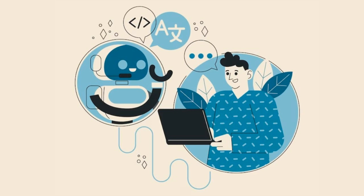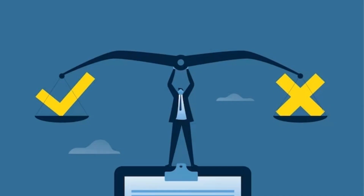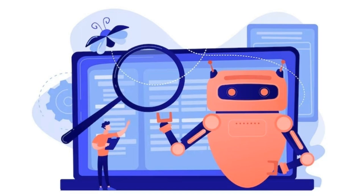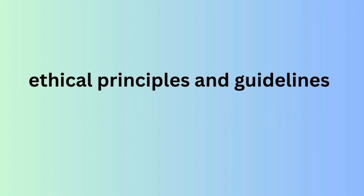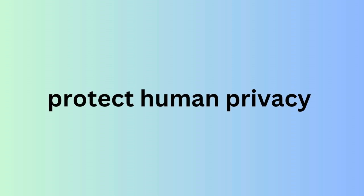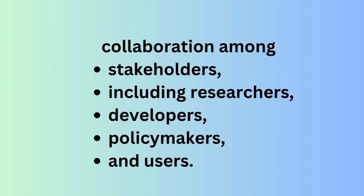As we enter the age of AI, we need to ensure that AI is aligned with human values and interests, and that it respects human dignity and rights. For example, we need to develop ethical principles and guidelines for AI design and use, protect human privacy and autonomy, and ensure human oversight and control. We also need to foster a culture of responsible innovation and collaboration among all stakeholders, including researchers, developers, policy makers, and users.